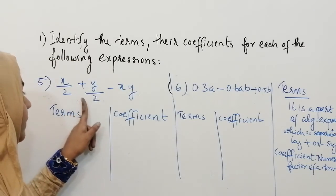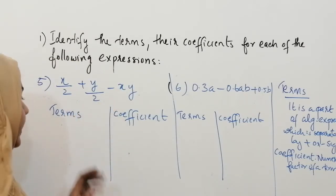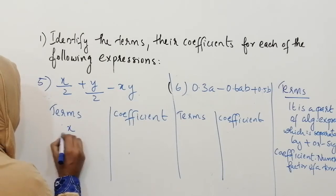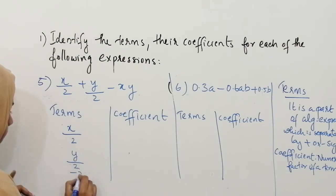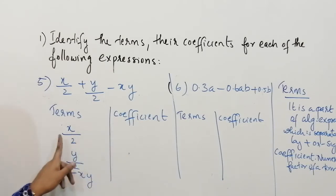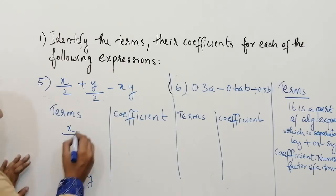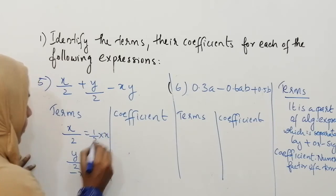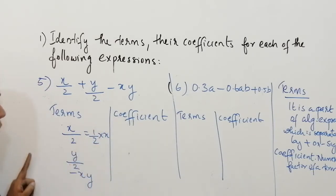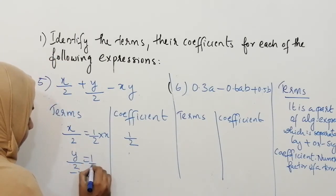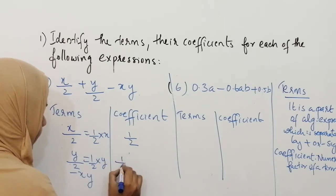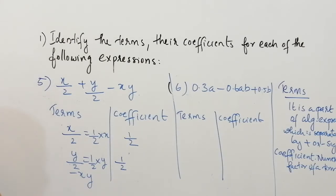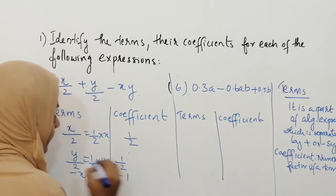Our fifth question is x/2 plus y/2 minus xy. First we can write the terms — in this expression there are three terms. The coefficient of x/2 is 1/2, because x/2 means 1/2 into x. Similarly, y/2 means 1/2 into y, so the coefficient of y/2 is 1/2. Minus xy is minus 1 into xy, so the coefficient of minus xy is minus 1.